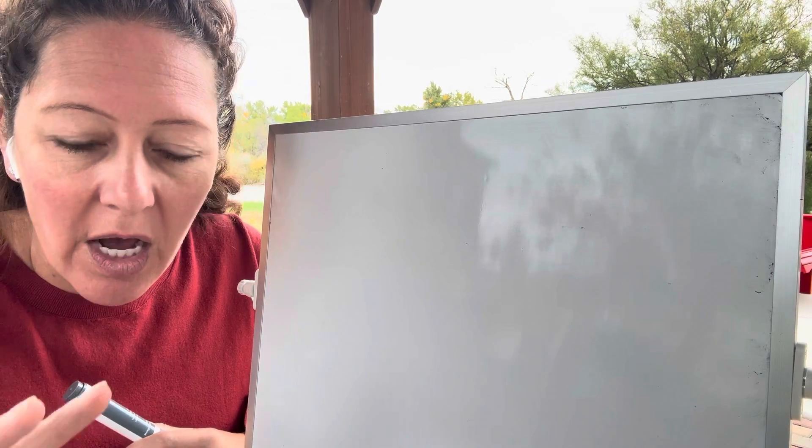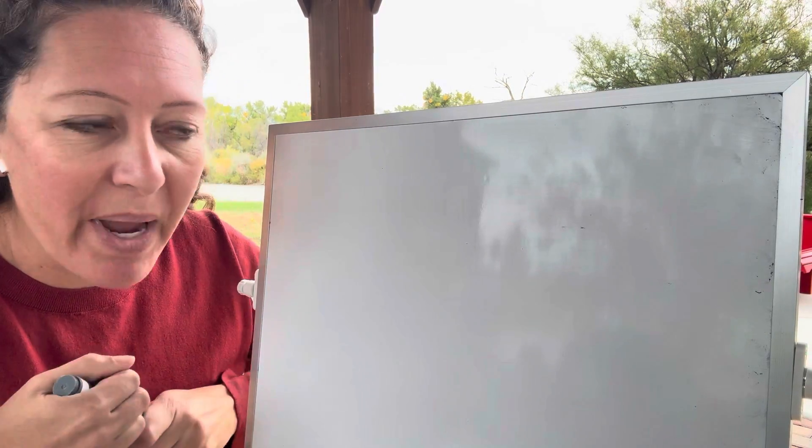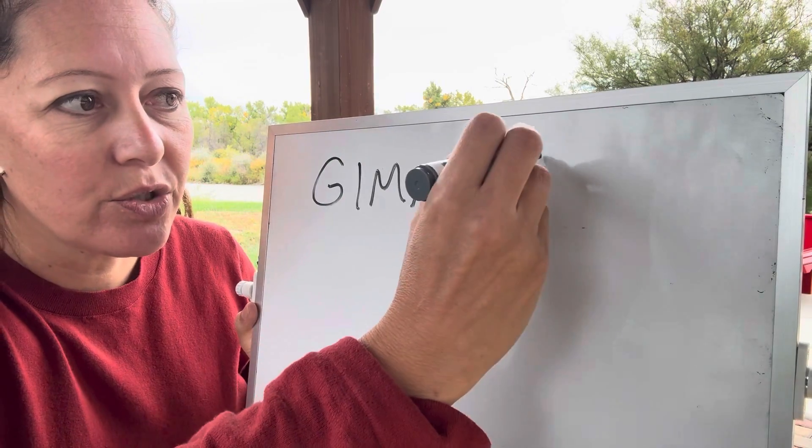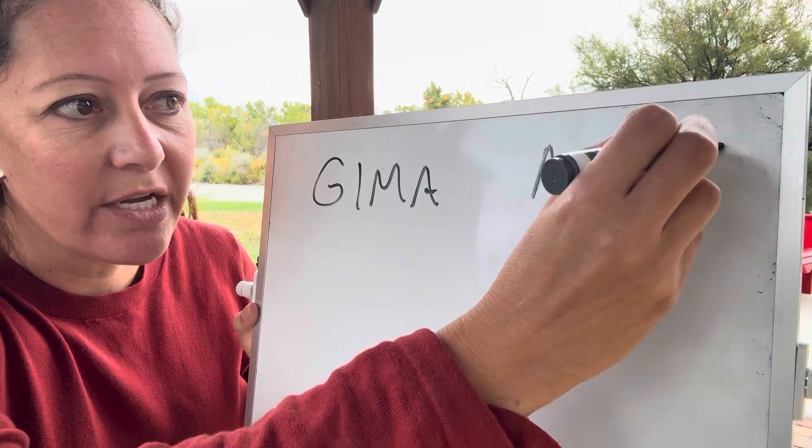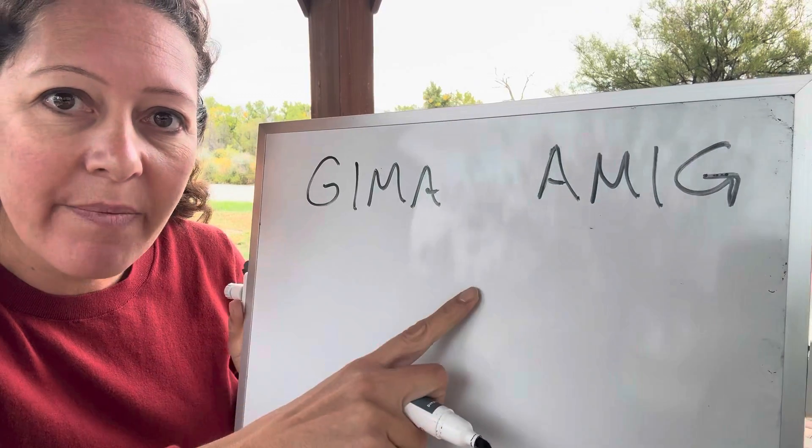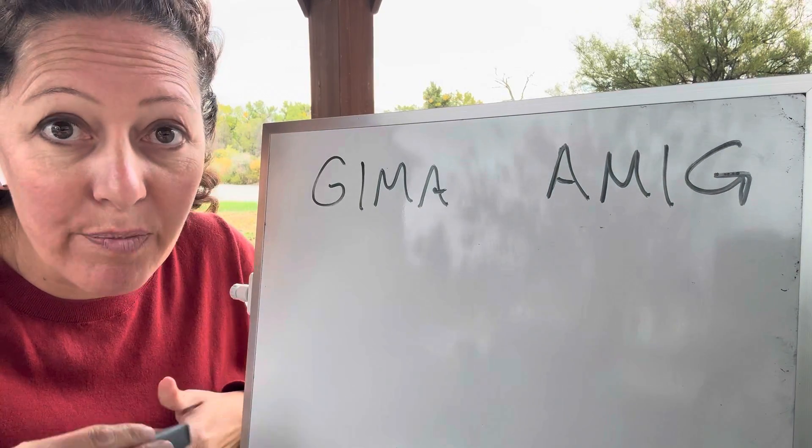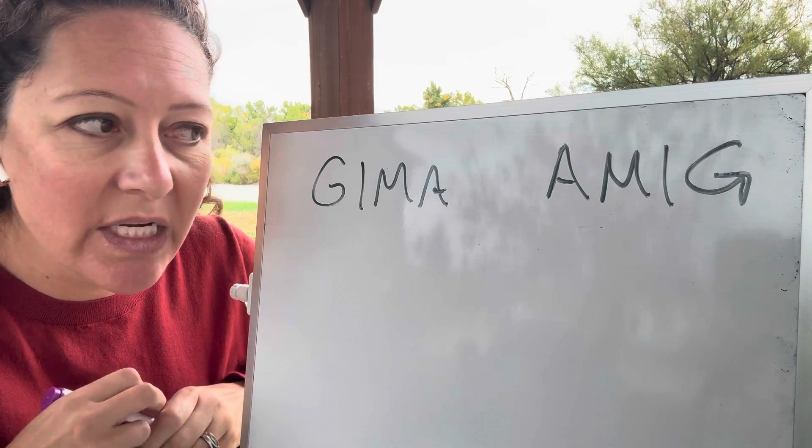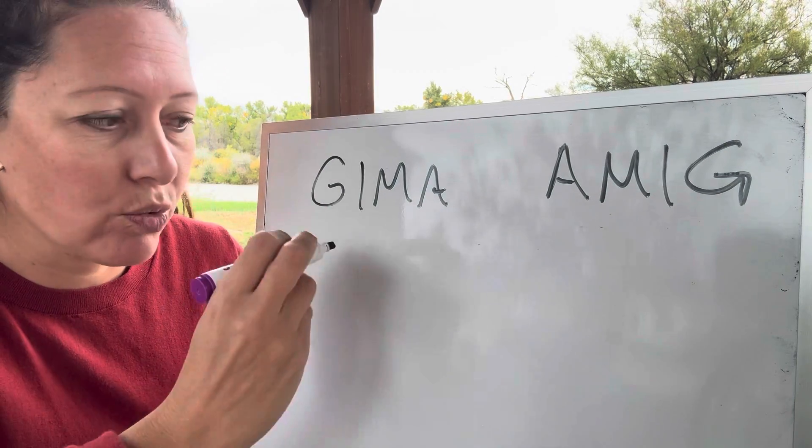But I'm just going to go over a couple different items. So compare GIMA to AMIG. And GIMA is just the order of operations acronym that MathMap is using. So G stands for groups.